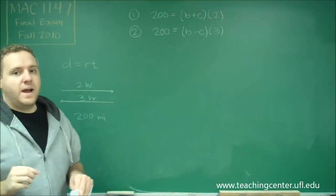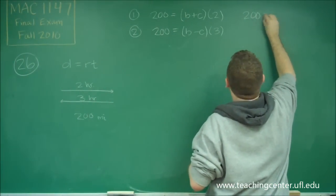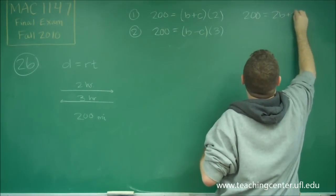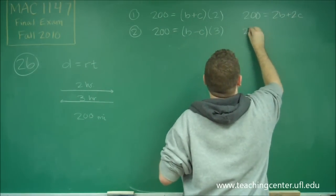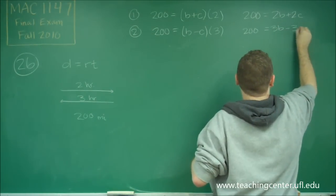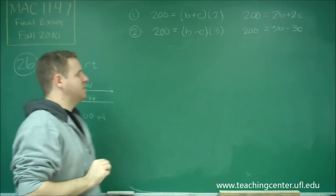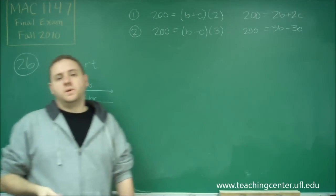So now, distributing here, we get that 200 equals 2B plus 2C. And 200 is also equal to 3B minus 3C. And now we just have a system of equations that we can solve.